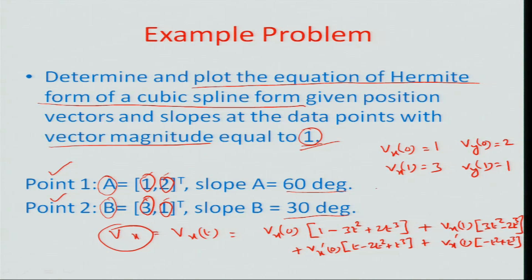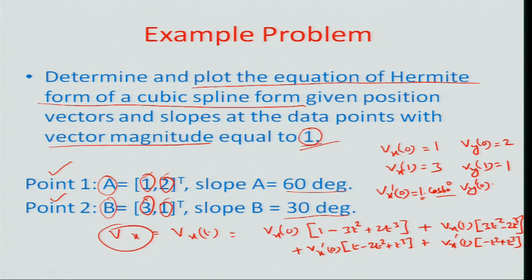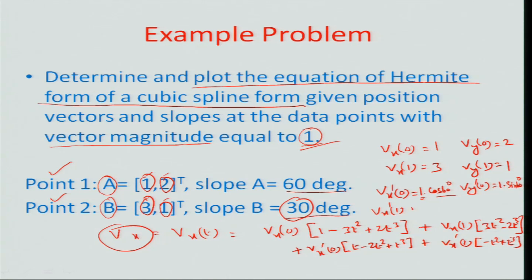We also know that Vx'0, the slope at t=0, is 1·cos(60°), where 1 is the magnitude of the tangent and cos(60°) is the x-component. Similarly, Vy'0 = 1·sin(60°). At the other end, Vx'1 = 1·cos(30°) and Vy'1 = 1·sin(30°), since the slope at that point is 30 degrees. Given all these parameters, we can substitute them back into the equation.